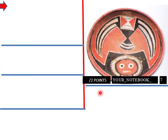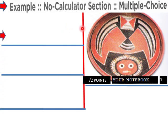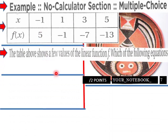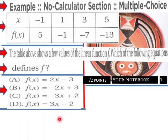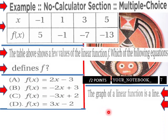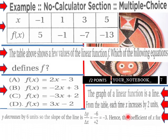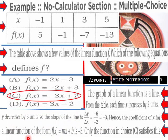Page 7 of this lesson. No calc section, multiple choice. Here's a table. The table above shows a few values of the linear function f, which of the following equations defines f? Here is our array of possibilities. The graph of a linear function is a line. From the table, each time x increases by 2 units, y decreases by 6. So the slope is -3, hence the coefficient for x would be -3 here.